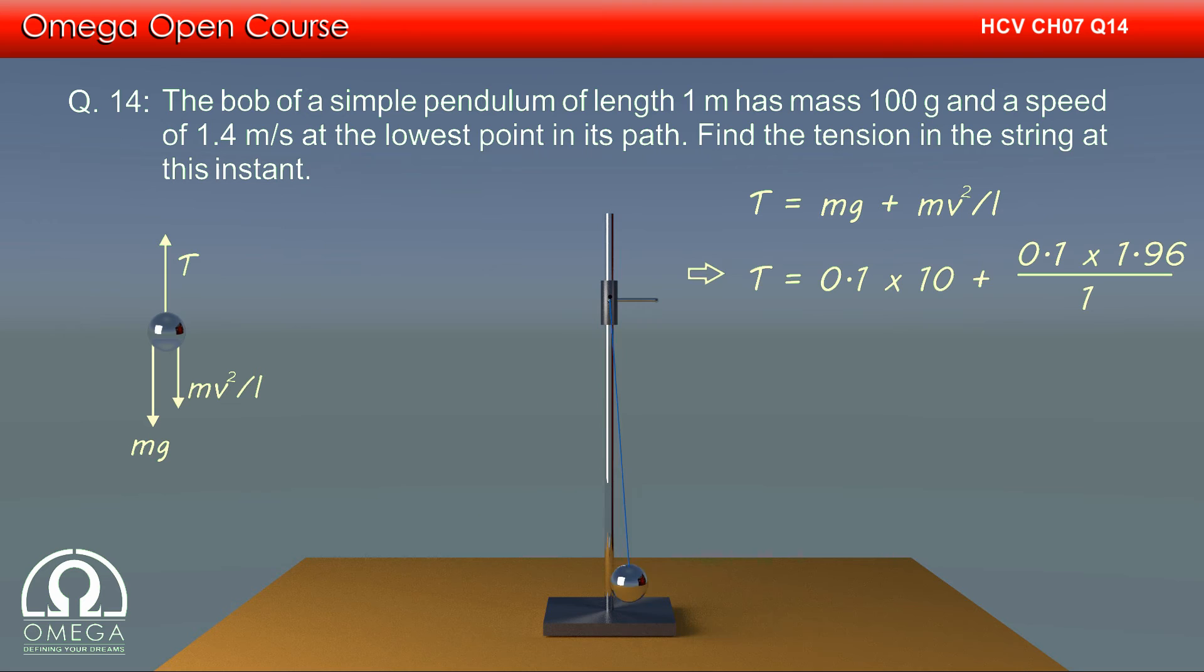Putting the values, we get T is equal to 0.1 into 10 plus 0.1 into 1.96 divided by 1 that is 0.1 plus 0.196 which when rounded to two significant figures becomes 1.2 newtons.